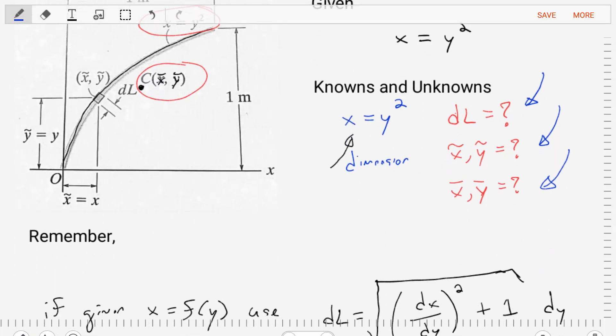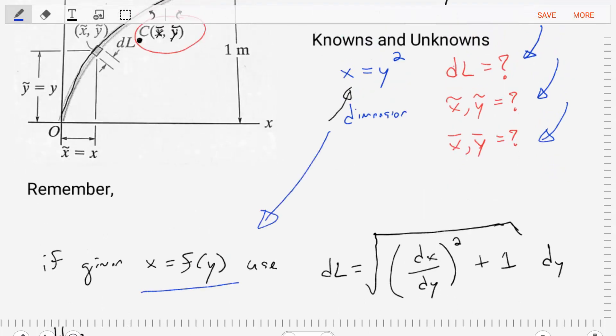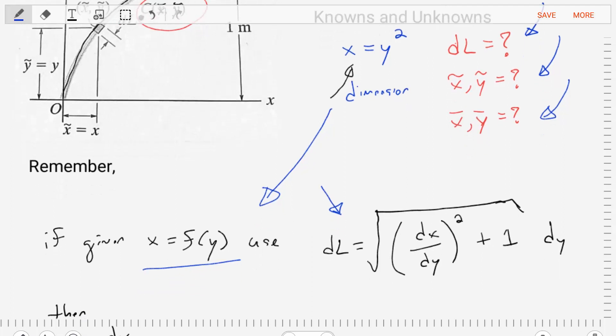If we go into our notes and we look in the book, we can see that if we're given an equation x is equal to the function of y, and that's what we have, x is equal to some function of y, it's equal to y squared, then we should use the following in replacement for our differential length. Where the differential length, dL, is equal to the square root in brackets, dx/dy, in closed bracket squared, plus one times dy. So this is the expression we're going to use for our differential length.